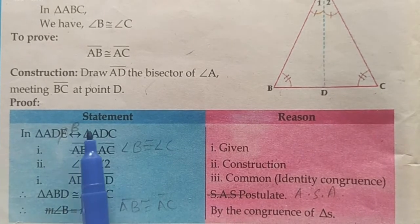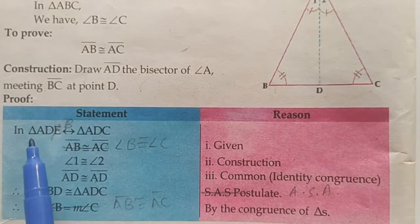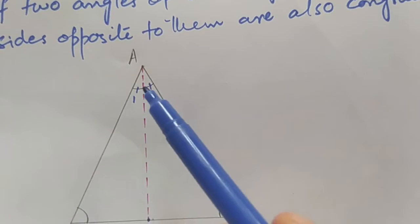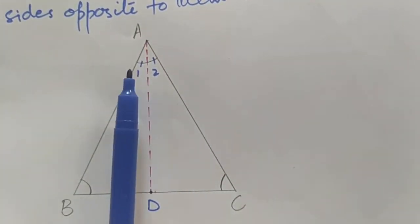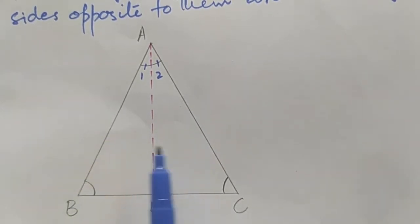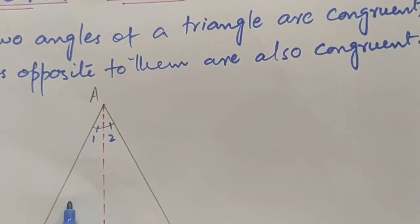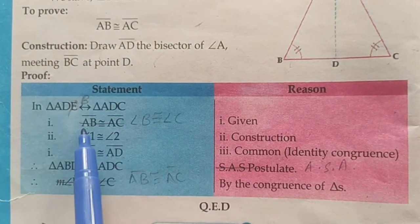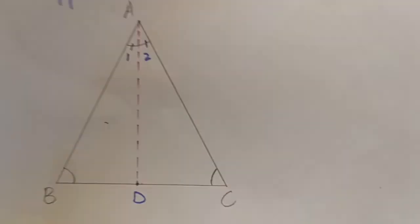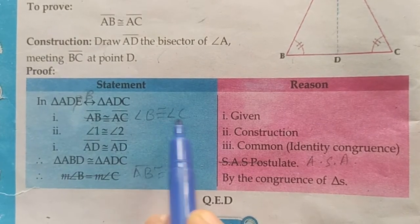Now let's start the proof. In the correspondence of two triangles — triangle ADB and triangle ADC — the first statement is: angle B is congruent to angle C. The reason is that this is given. The second statement is: angle 1 is congruent to angle 2. The reason is construction, because AD is the angle bisector of angle A.